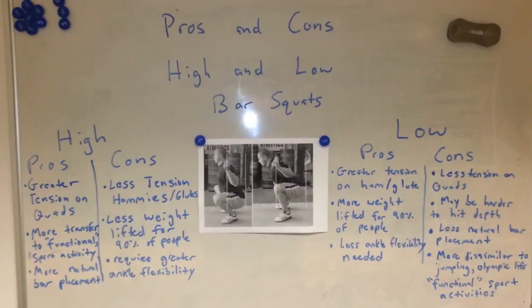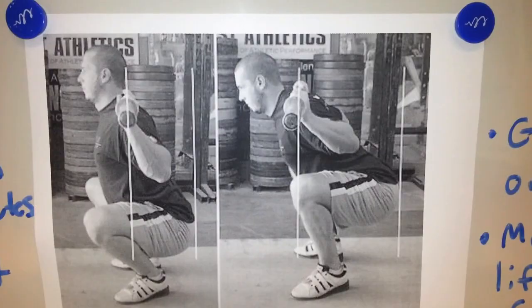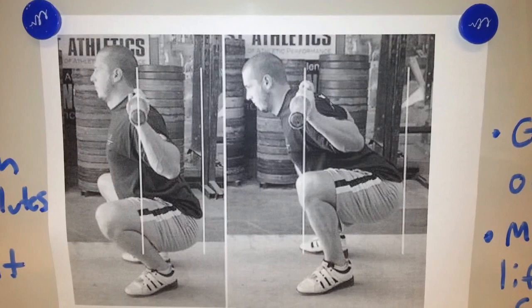Let's analyze these two movements. The high bar squat is called high bar simply because the bar sits on the upper part of your traps, so the bar is higher. A low bar squat is typically lower on the traps and is going to be supported mostly by the rear delts.